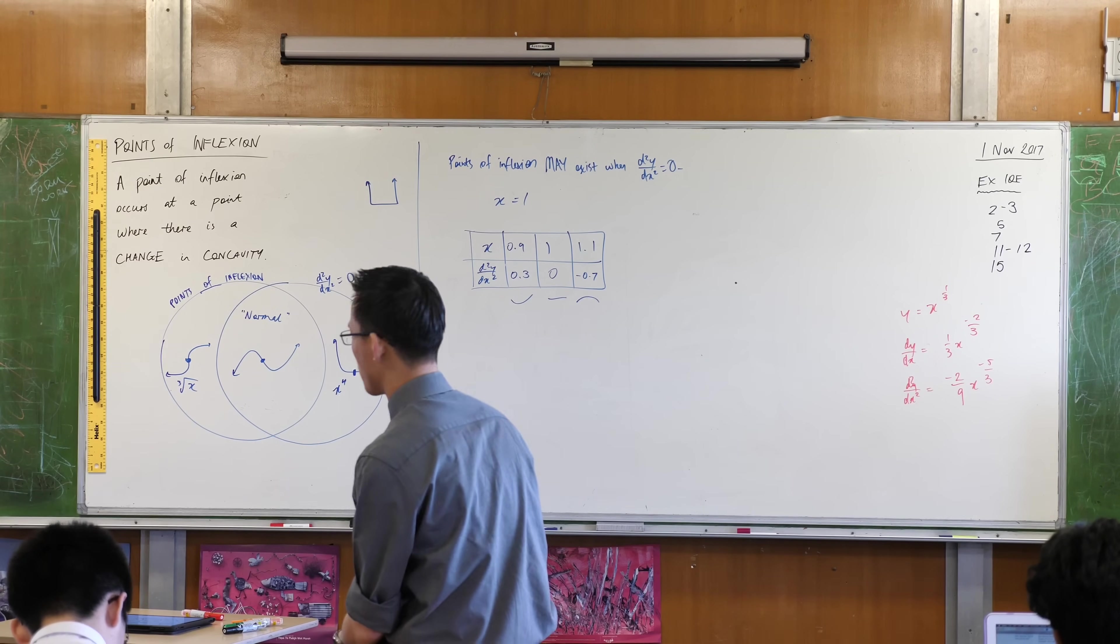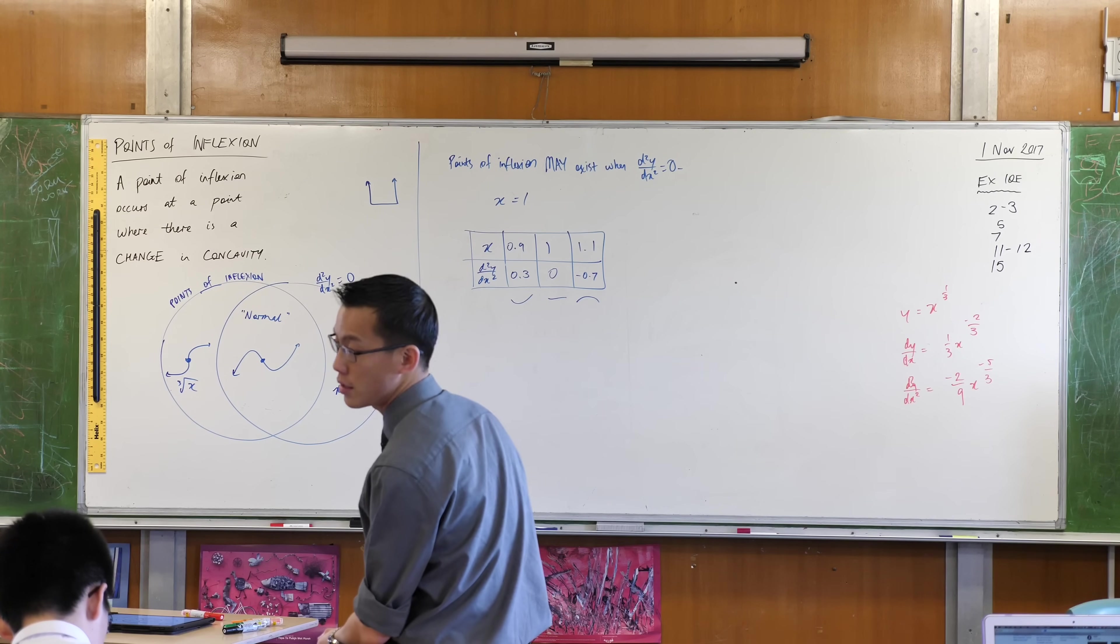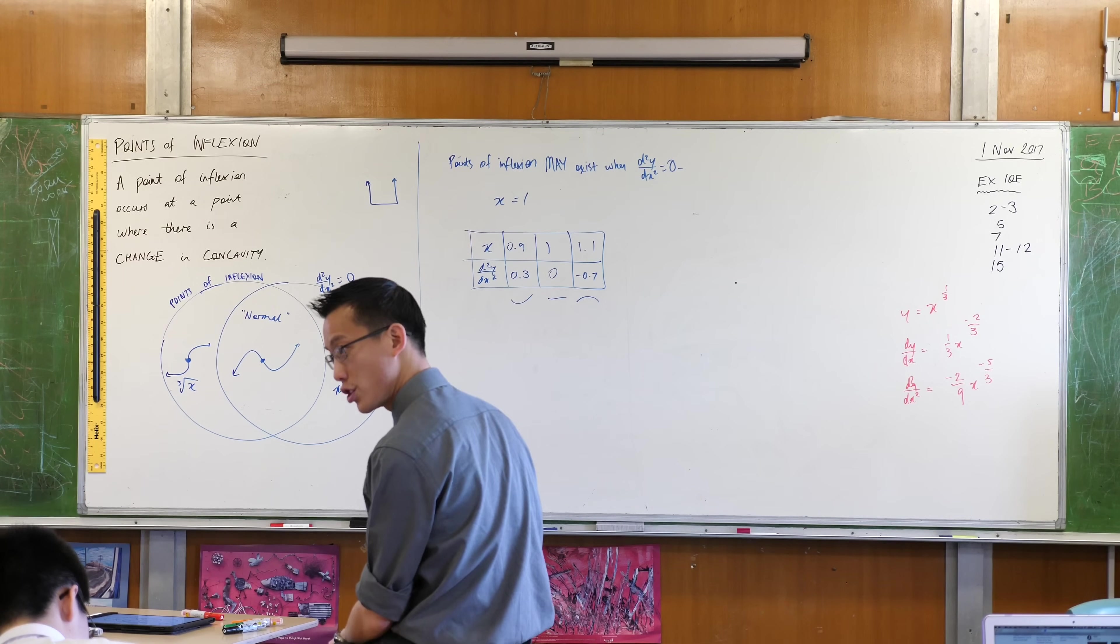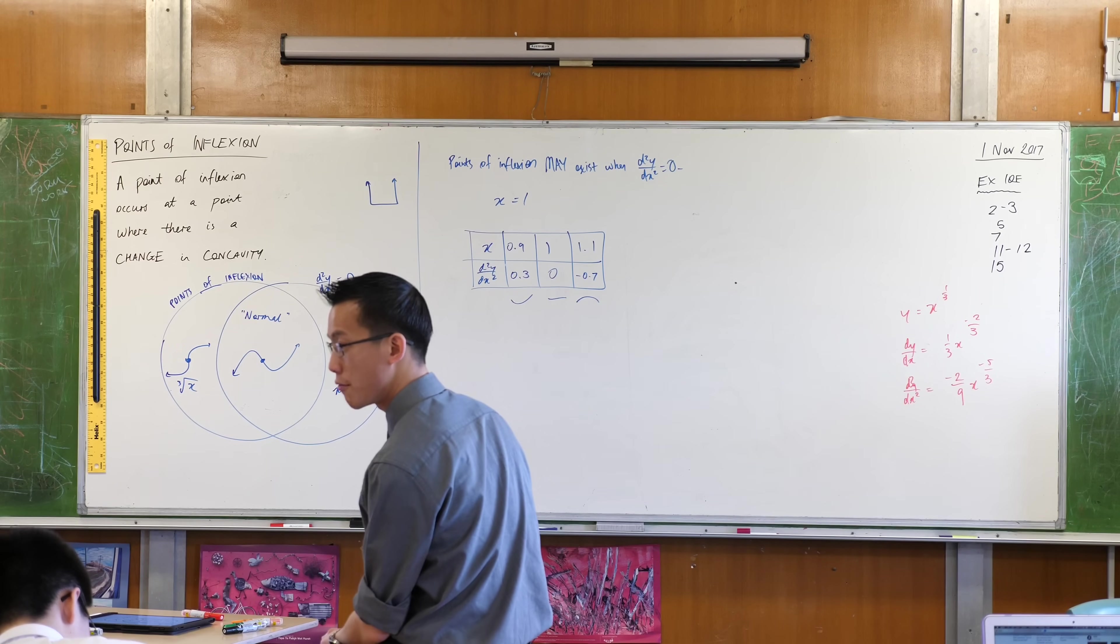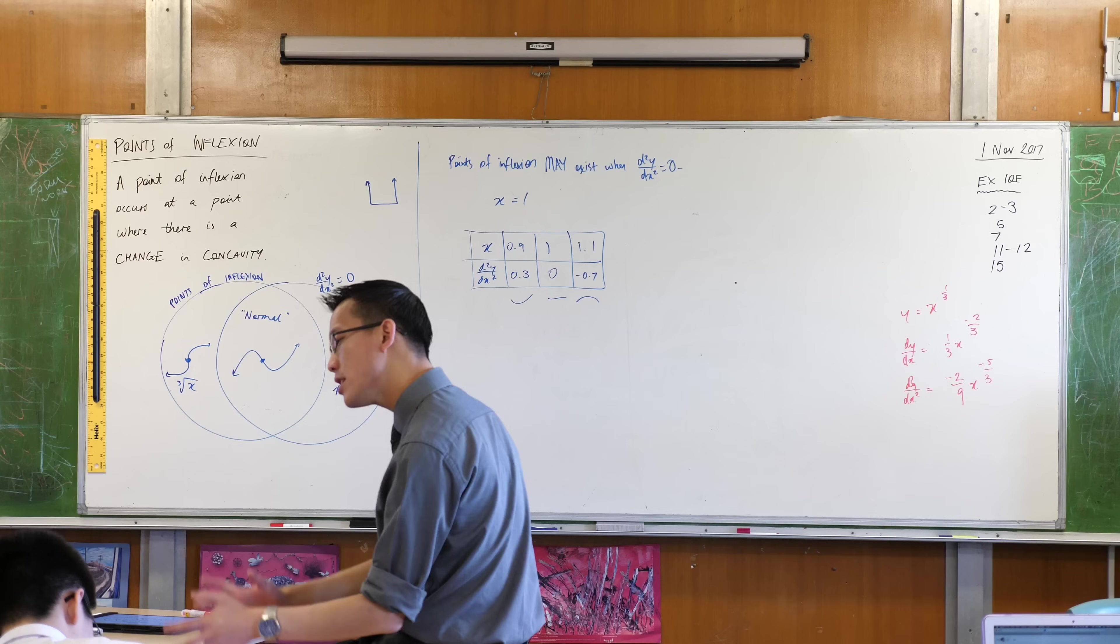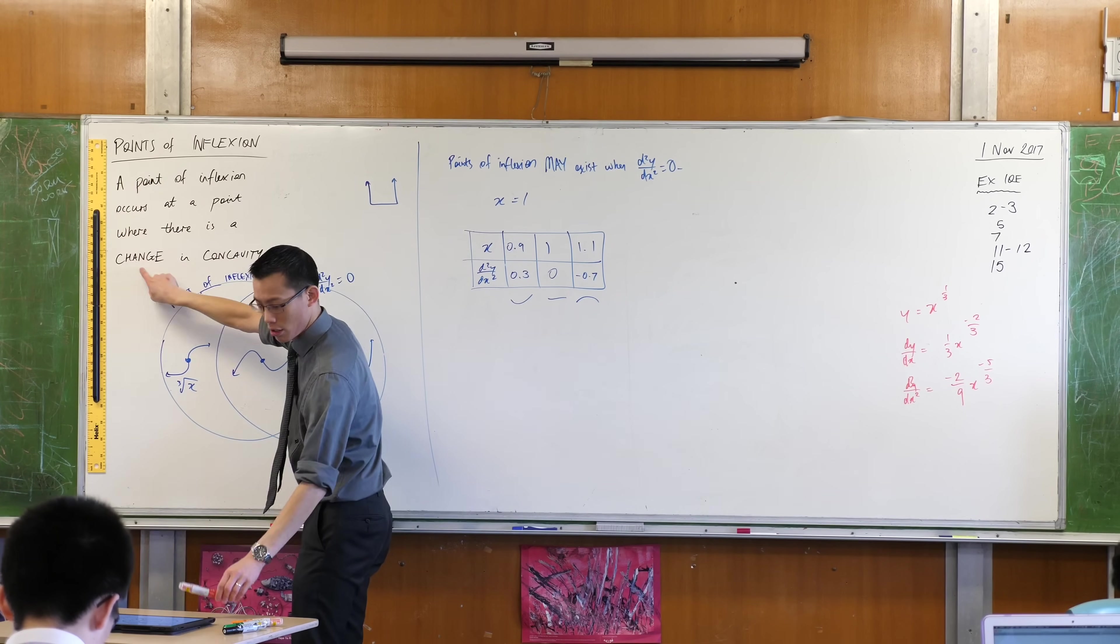The cube root of x is in there as a special example because it is probably the most commonplace example of a point of inflection that doesn't have a second derivative at the point of inflection. It is a point of inflection because it fits the definition. There's a change in concavity.